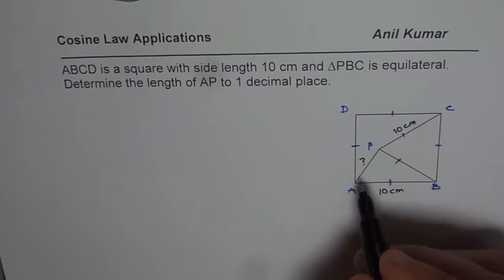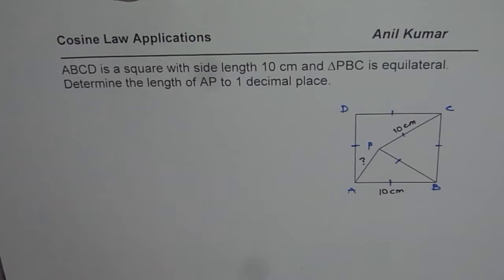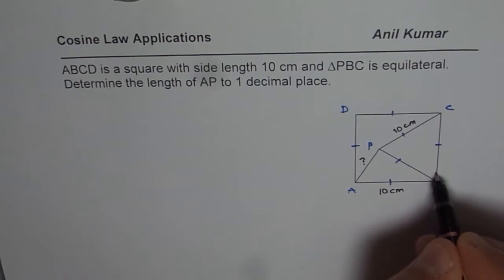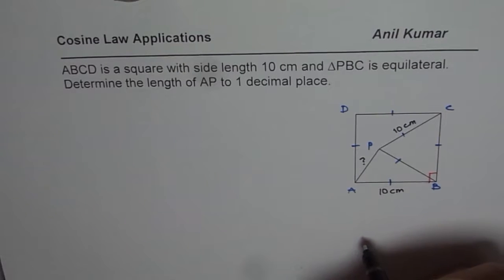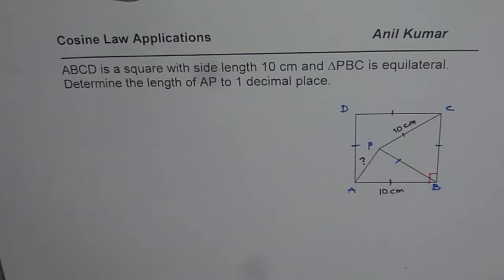To find AP, what we can do is calculate the angle PBA. We know that this angle is 90 degrees. Perfect. Now here we have an equilateral triangle. Equilateral triangle means what? 60 degrees.